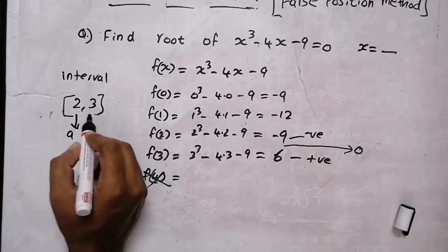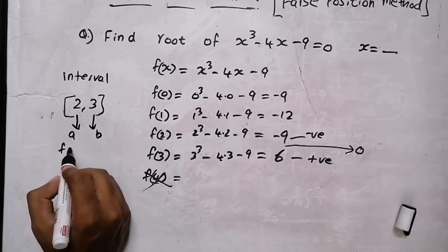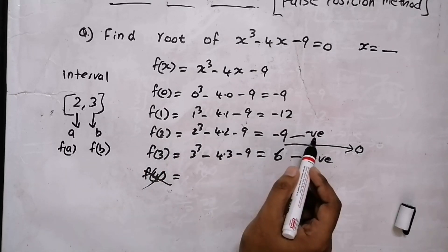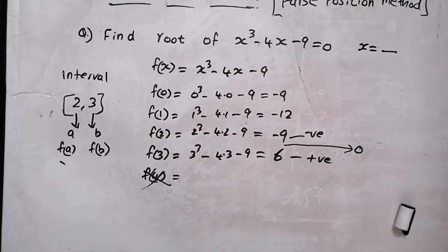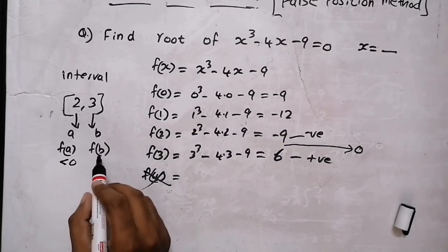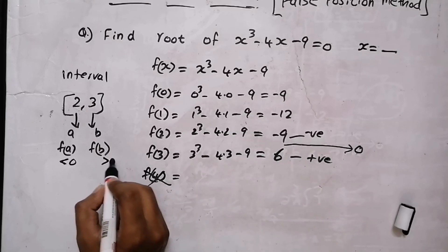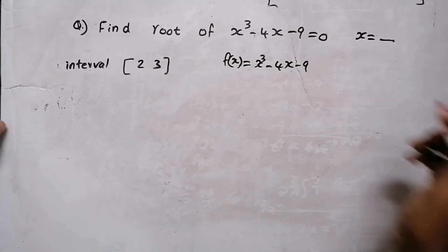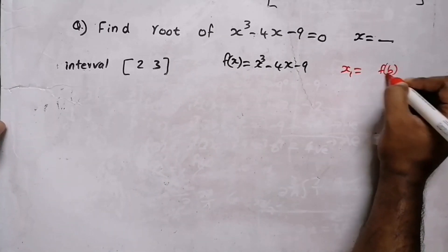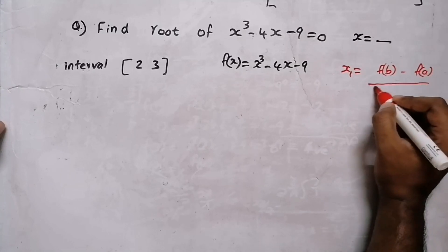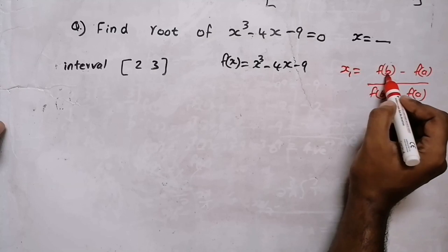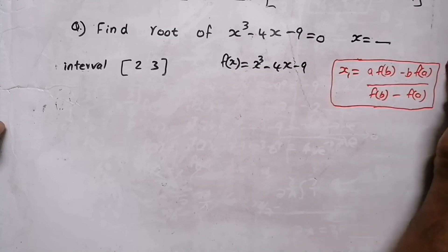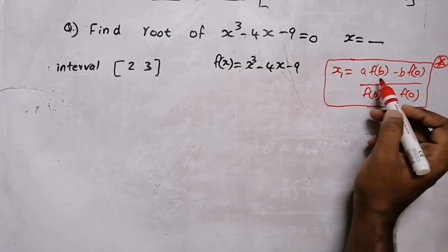We substitute a = 2 and b = 3. So f(a) = -9, which is less than 0, and f(b) = 6, which is greater than 0. In the Regula Falsi method, the formula is: x₁ = [a·f(b) - b·f(a)] / [f(b) - f(a)]. In the numerator, a is near f(b) and b is near f(a).